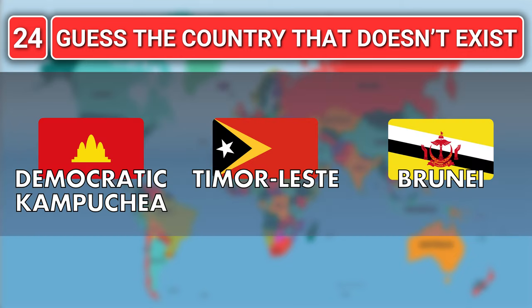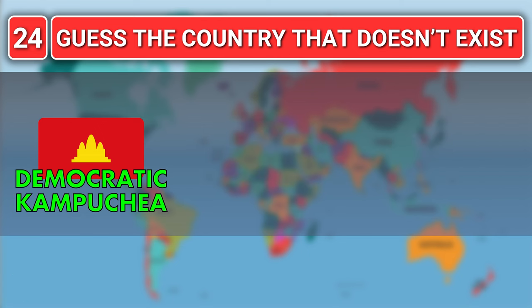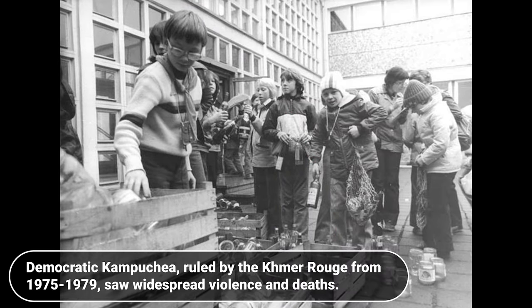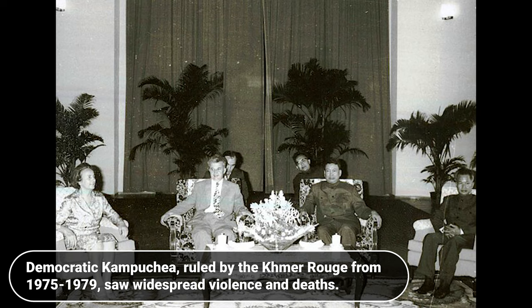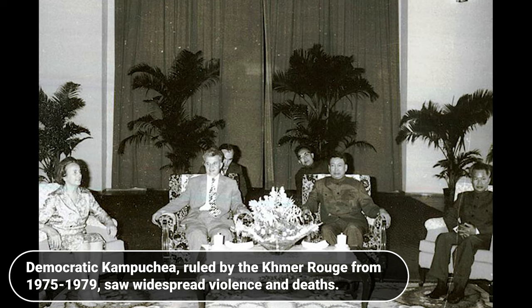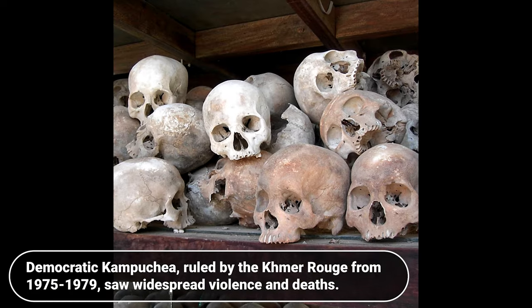Which one does not exist? Democratic Kampuchea, Timor-Leste or Brunei? Democratic Kampuchea, ruled by the Khmer Rouge from 1975 to 1979, saw widespread violence and deaths.